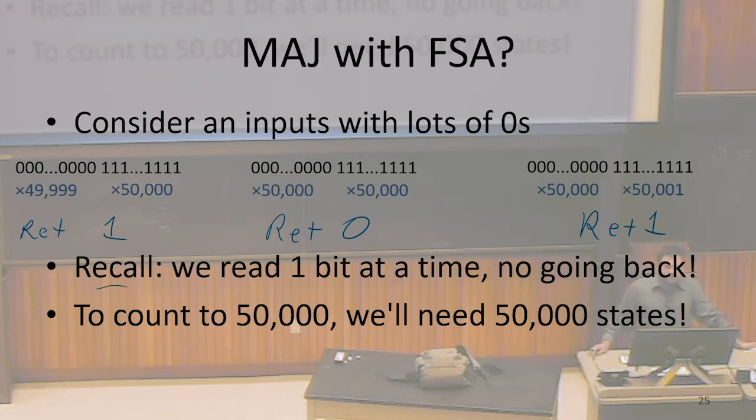In our model of computation for finite state automata, we said that we were always going to be reading things one bit at a time and we were never allowed to go back. Once I had finished reading all 49,999 of these zeros, I was never allowed to go back and look at another zero again. I'm never going to see another zero for the rest of my computation. It's just going to be ones the rest of the way.